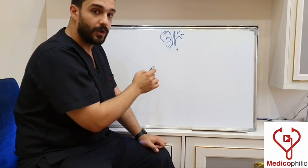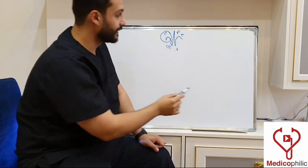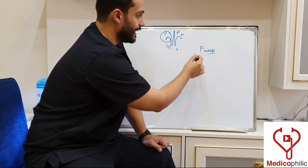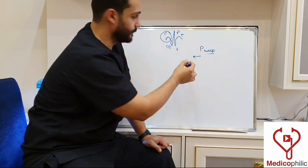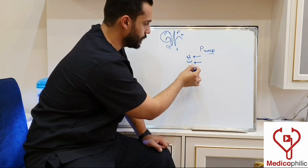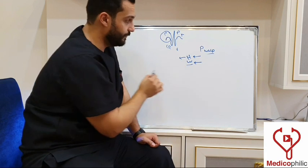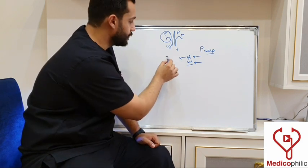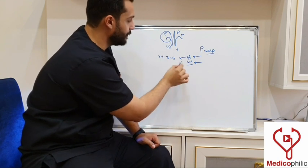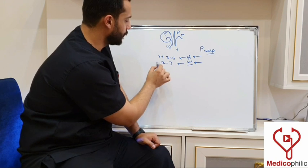We are going to talk about P wave normalities and abnormalities. The P wave has a vertical height and a duration or width. The normal height of the P wave ranges between two to five small squares, and the normal width of the P wave ranges between two to three small squares.